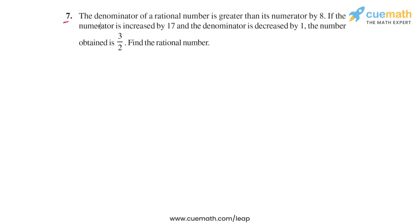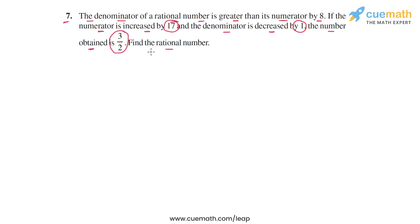In question 7, the problem statement says that the denominator of a rational number is greater than its numerator by 8. If the numerator is increased by 17 and the denominator is decreased by 1, the number obtained is 3 by 2. Find the rational number. The unknown is the original rational number, and both the numerator and the denominator are unknown.